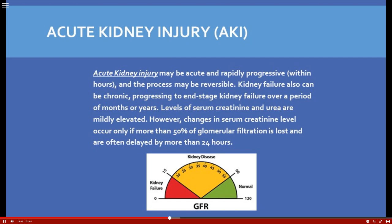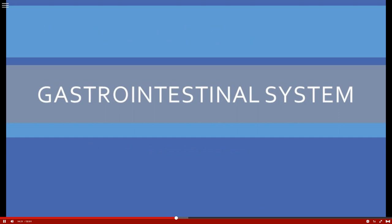You'll also see metabolic acidosis with acute kidney injury, depending on severity. The kidneys play an incredible role in acid-base balance, and with renal failure there's decreased hydrogen and decreased potassium excretion, contributing to metabolic acidosis. Now let's move ahead to the gastrointestinal system.